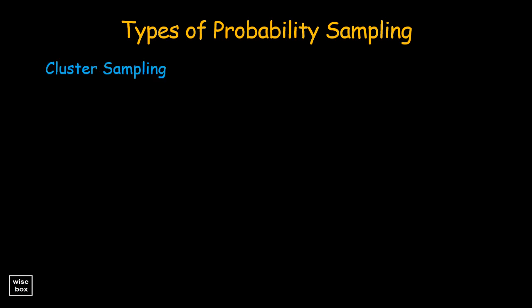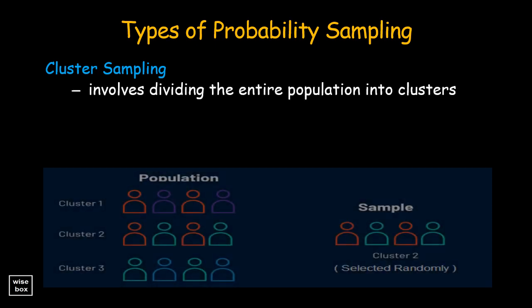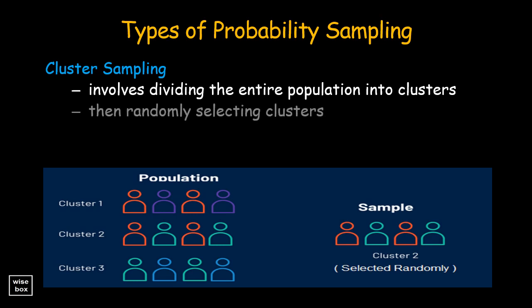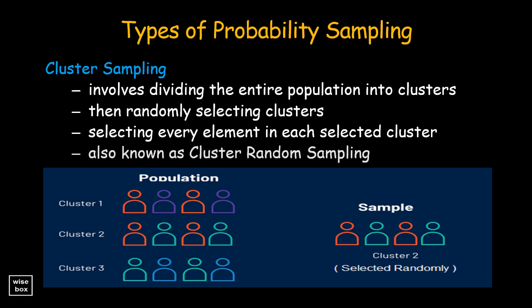Cluster sampling is a probability sampling procedure that involves dividing the entire population into clusters, then randomly selecting clusters of elements from a population, and subsequently selecting every element in each selected cluster for inclusion in the sample. Cluster sampling is a good option if data collection involves visits to sites that are very far apart. It is also known as cluster random sampling or area random sampling.